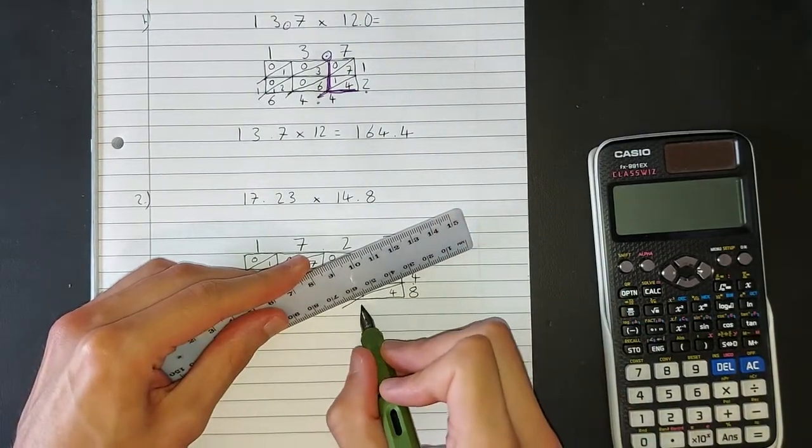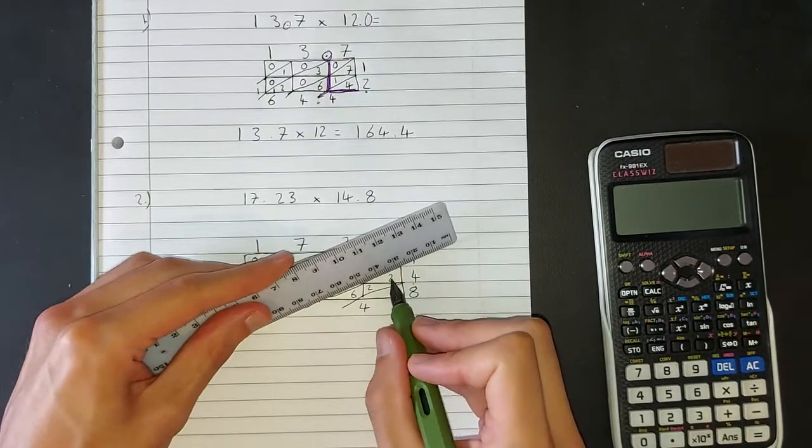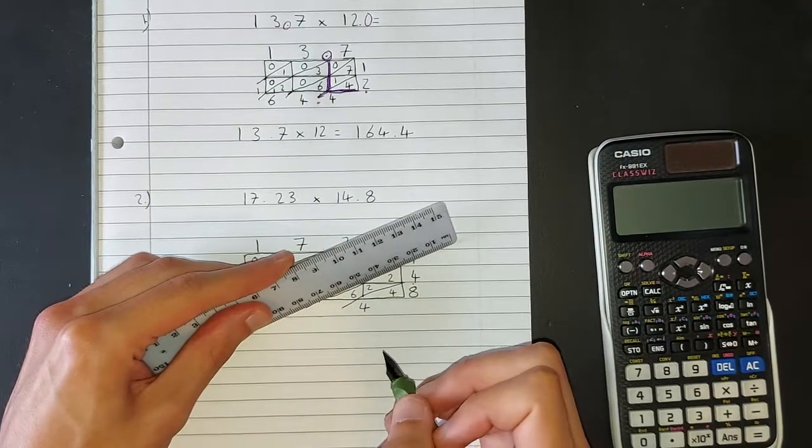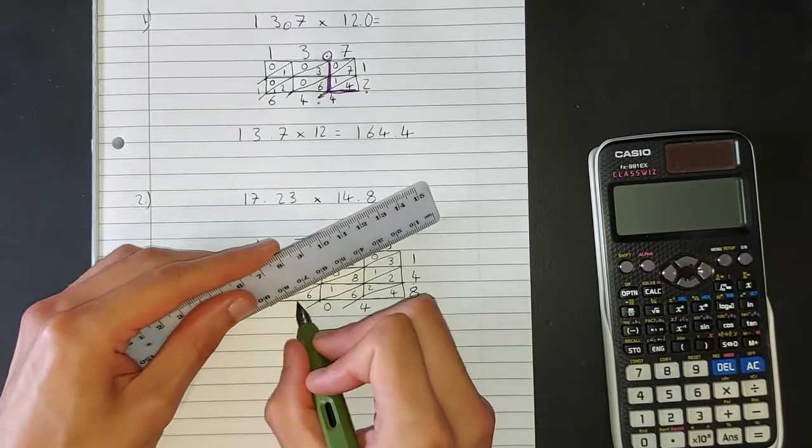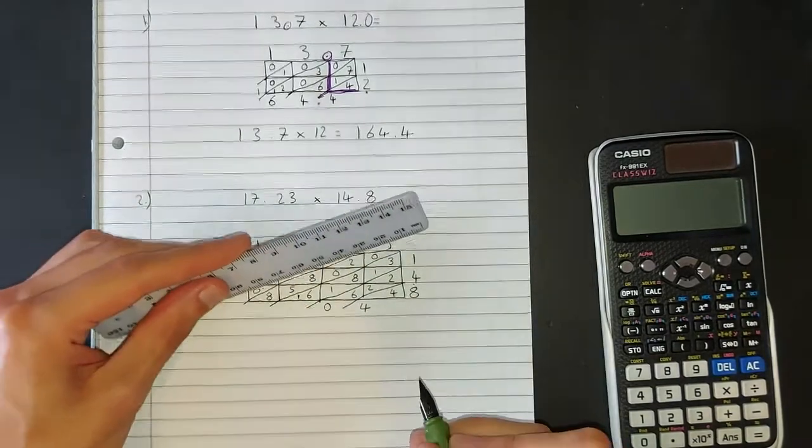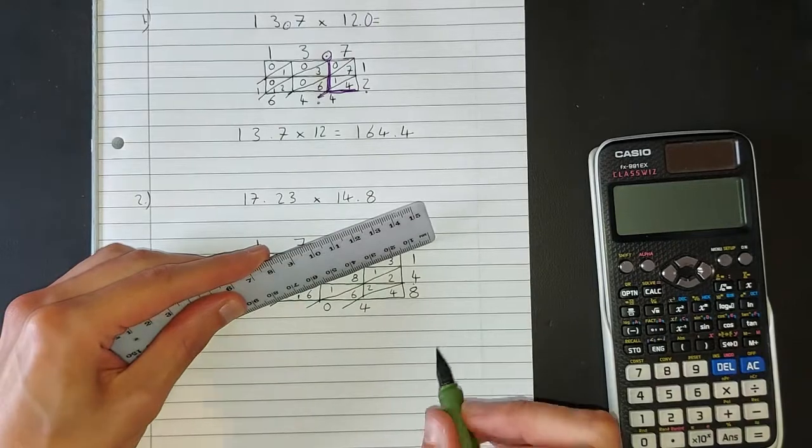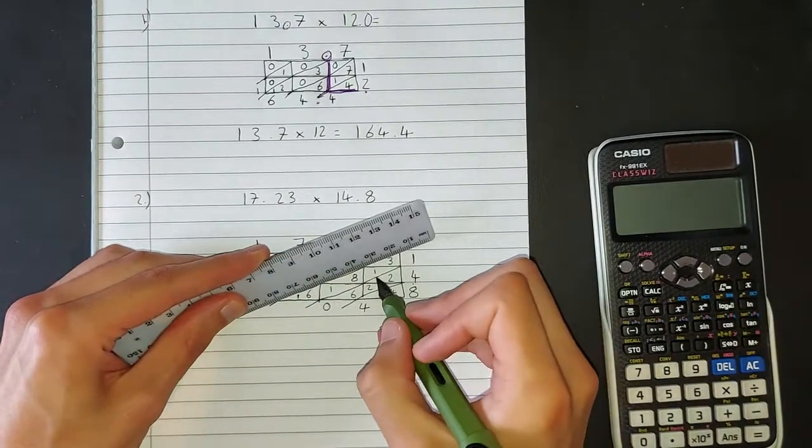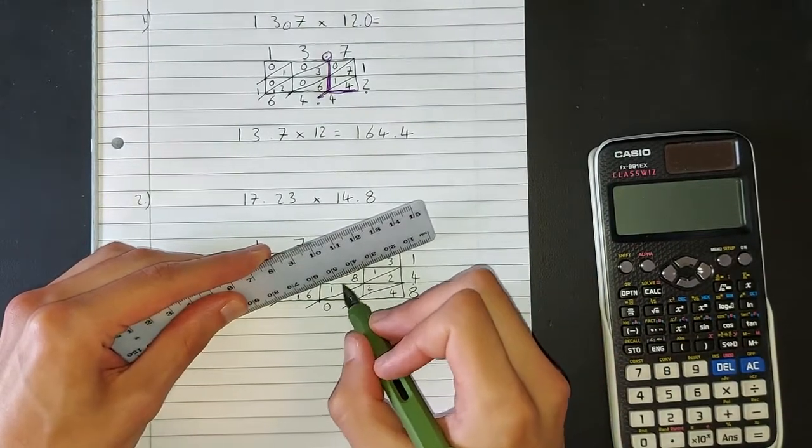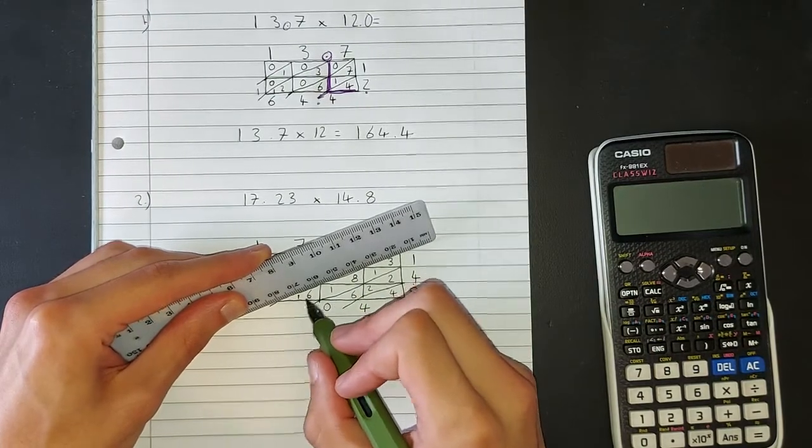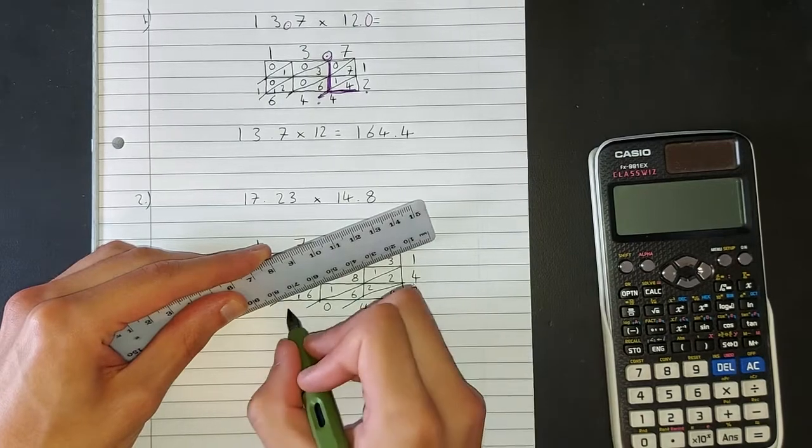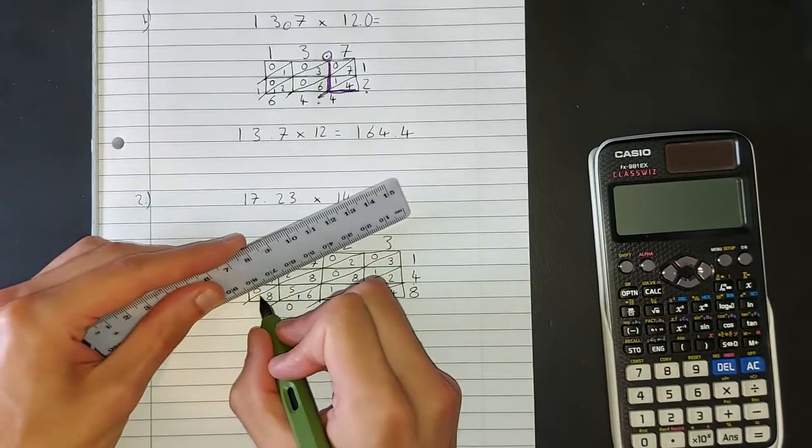So we have 1 times 8. 4, 4 add 8 is 12, 12 add 1 is 13, 13 add 6 is 19, add 1 is 20, so we put 0 and put 2 into this column.